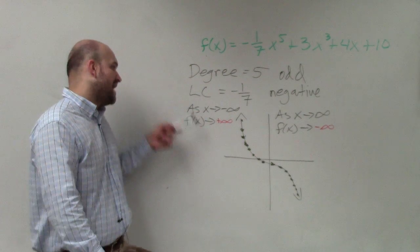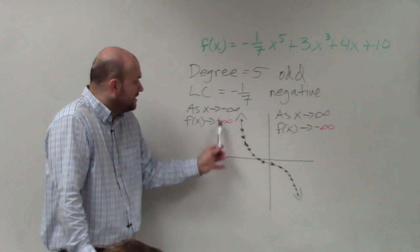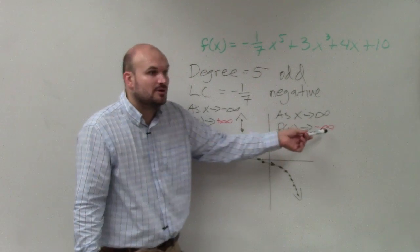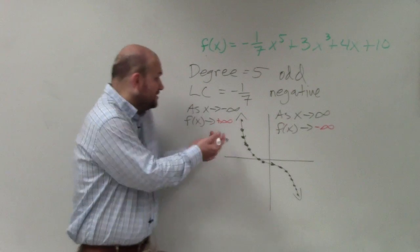As x approaches negative infinity, f of x approaches. As x approaches infinity, f of x approaches. And then you just need to determine, does it approach infinity or negative infinity? Infinity or negative infinity. And you're basically looking, if it approaches infinity, that means it's going up. If it approaches negative infinity, that means the graph is going down.